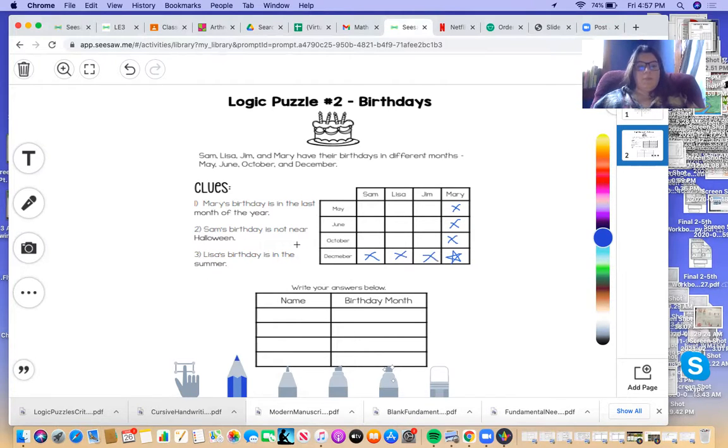Clue two. Sam's birthday is not near Halloween. So October is when there's Halloween. So we know that his birthday is not in October. So we can put an X there for him.